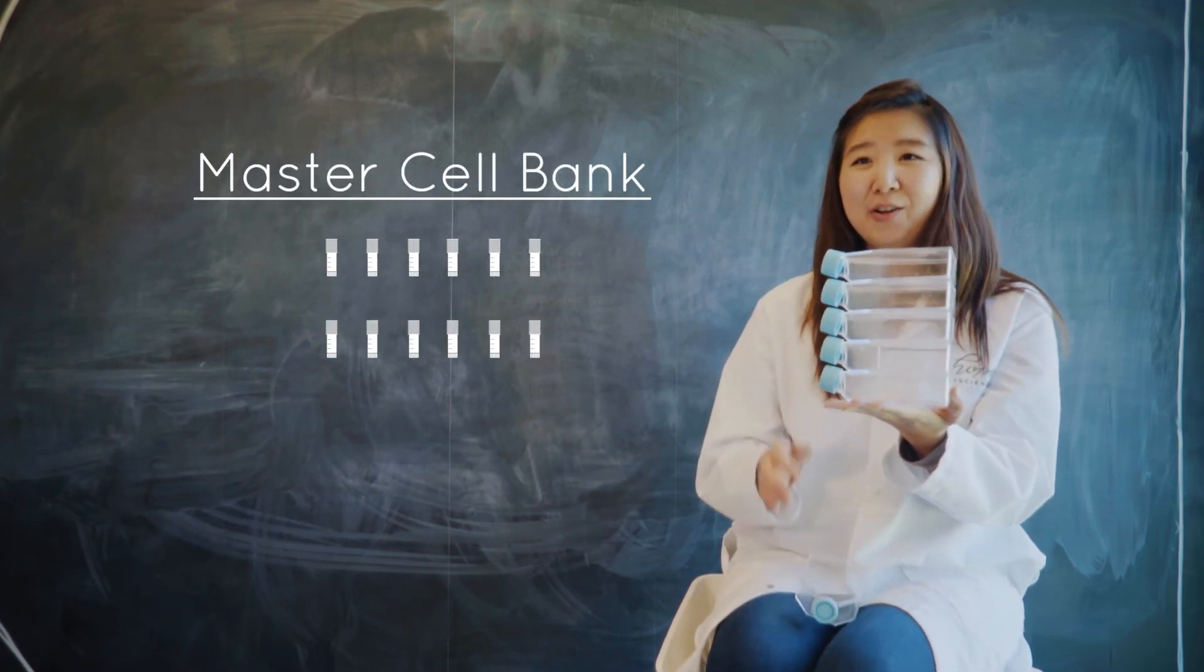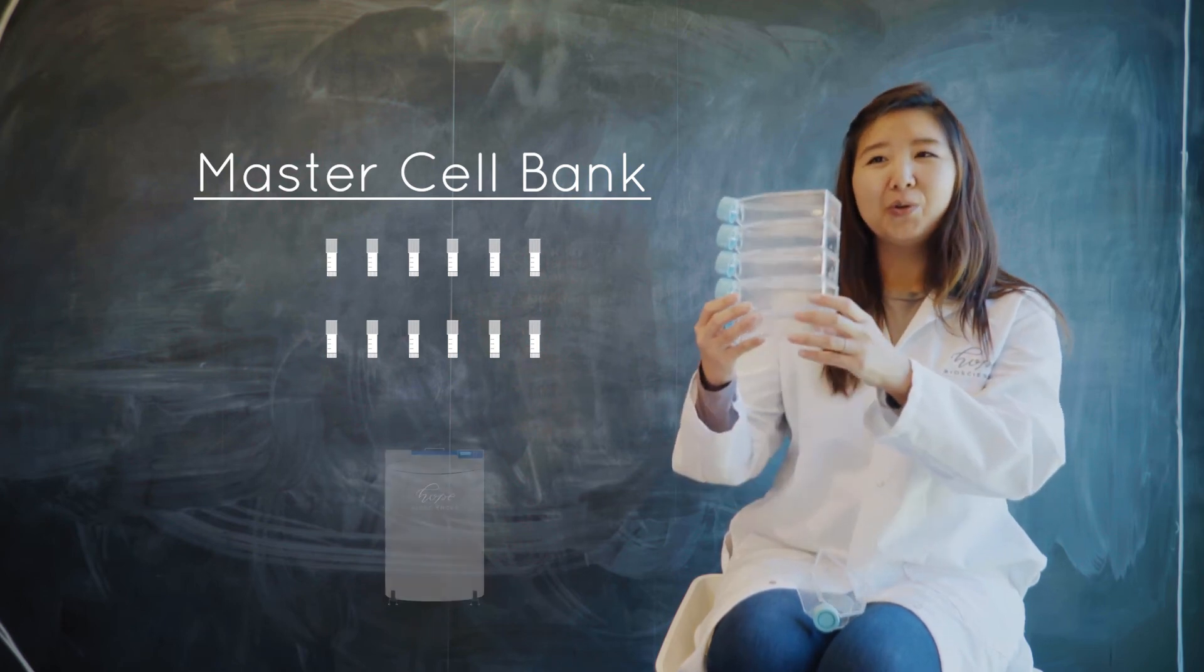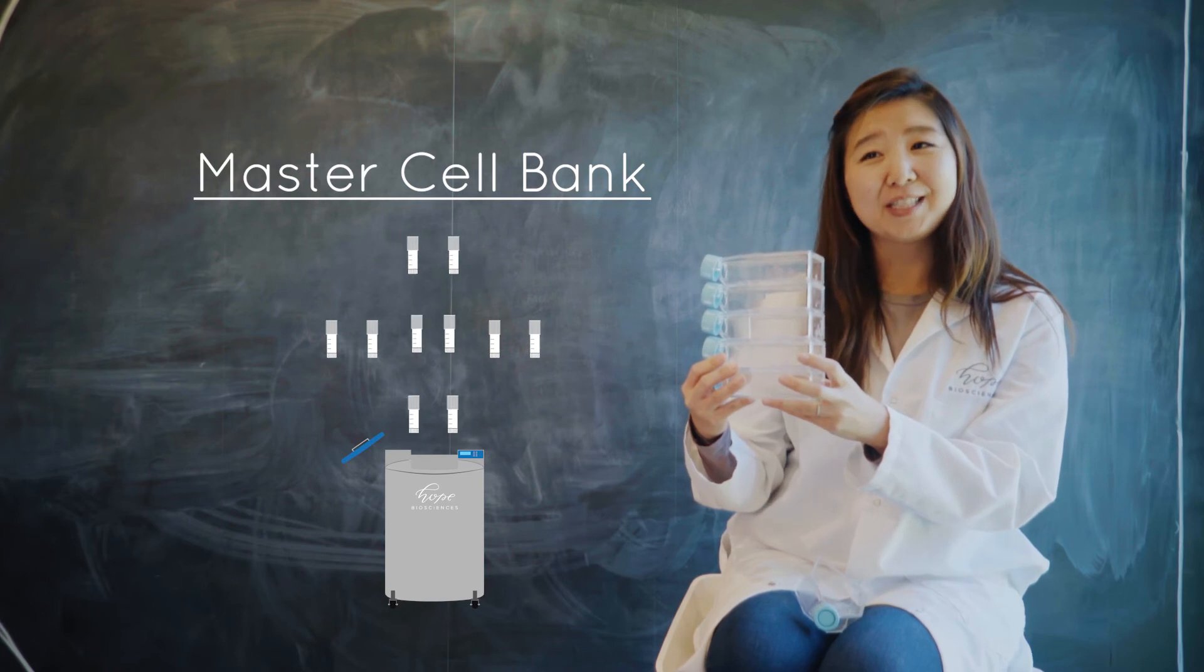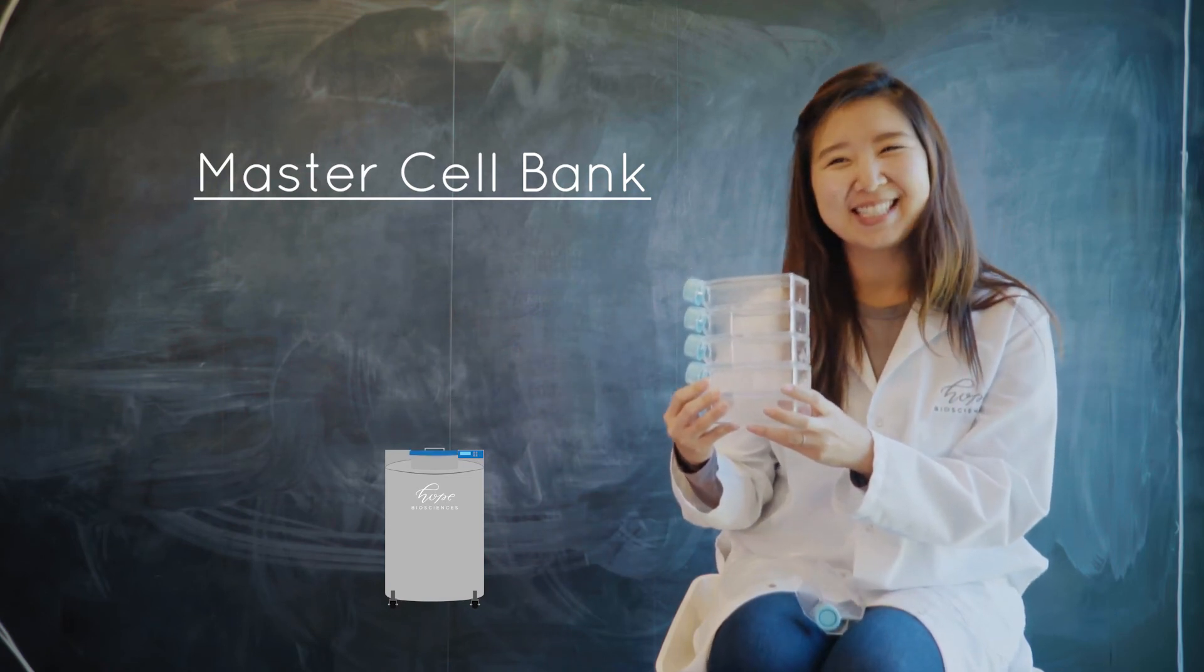In total, from the time that your fat is taken to the time we store your master cell bank, it'll take about five to six weeks, at which point you'll be notified that your stem cells have been successfully banked.